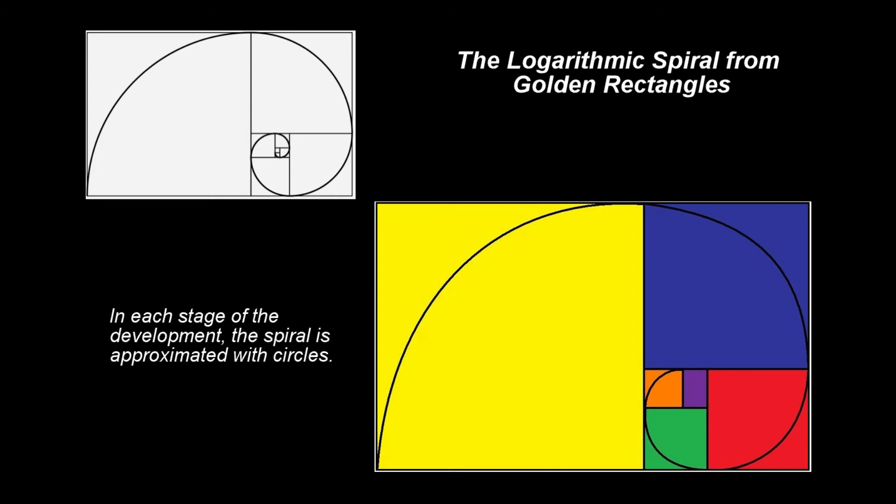Another way of constructing a logarithmic spiral is to use the golden rectangles. Here again, in each stage of the development, the spiral is approximated with circles.